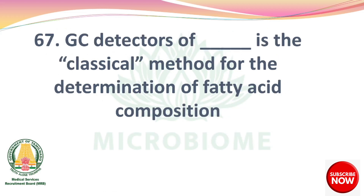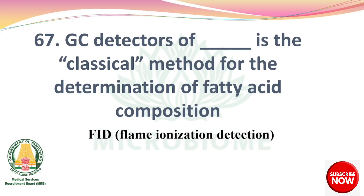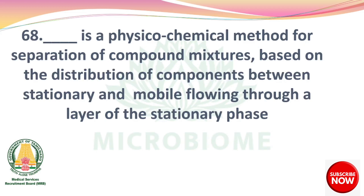Next, GC detectors of dash is the classical method for the determination of fatty acid composition — FID (flame ionization detection). Next, dash is a physicochemical method for separation of compound mixtures based on the distribution of components between the stationary and mobile phase flowing through a layer of stationary phase — chromatography.